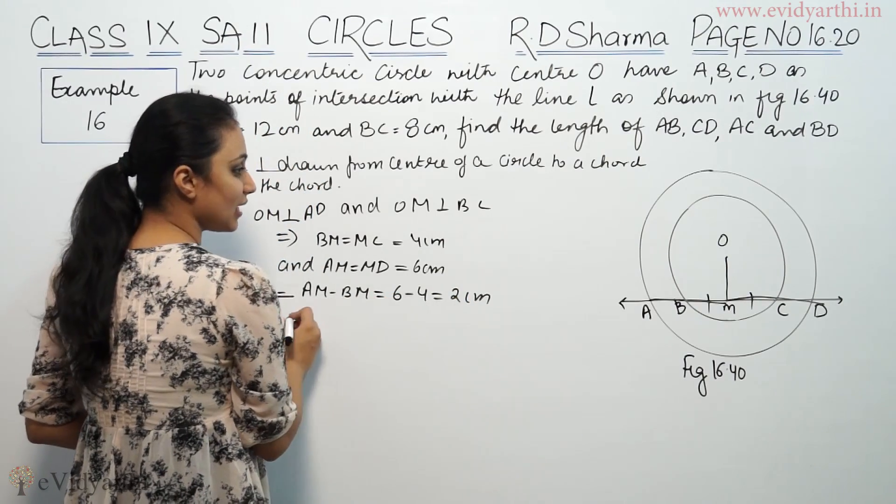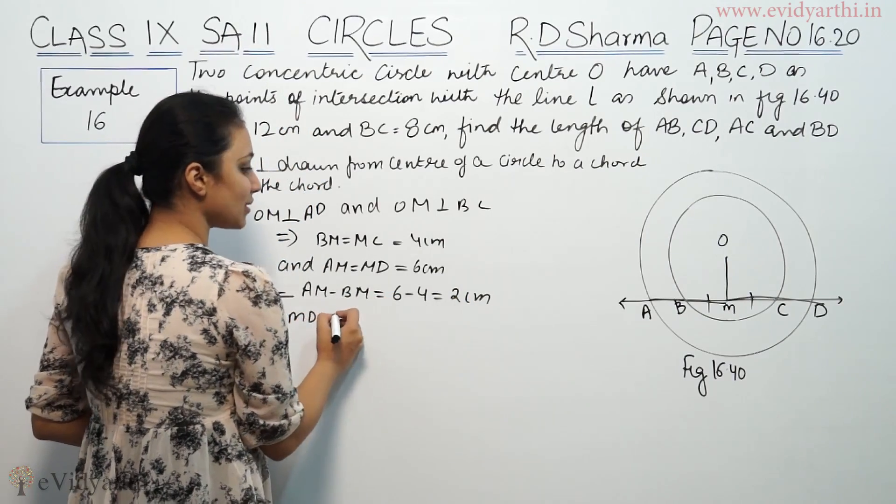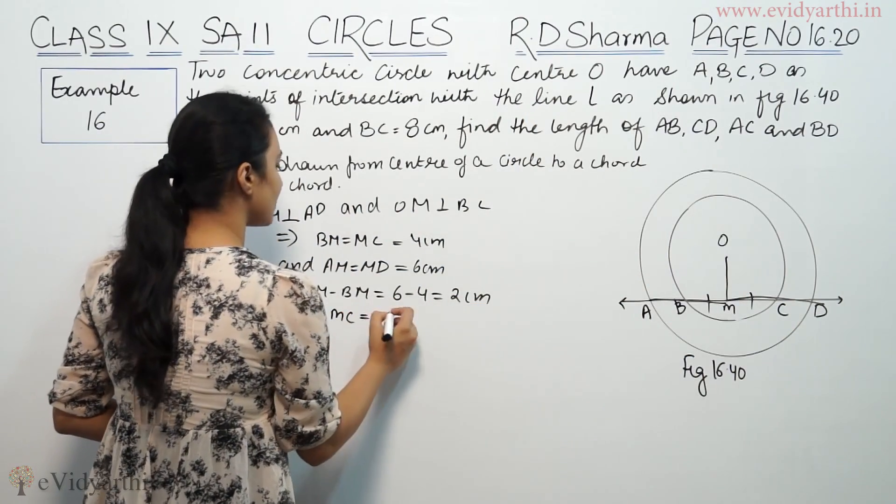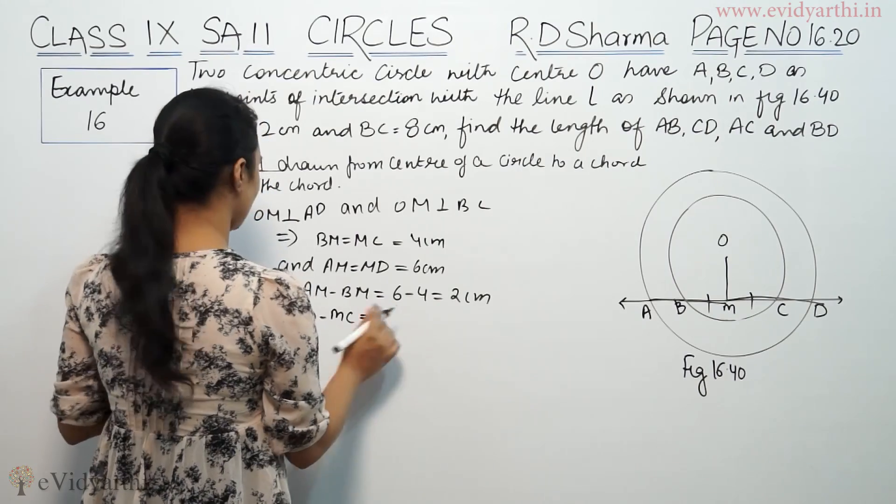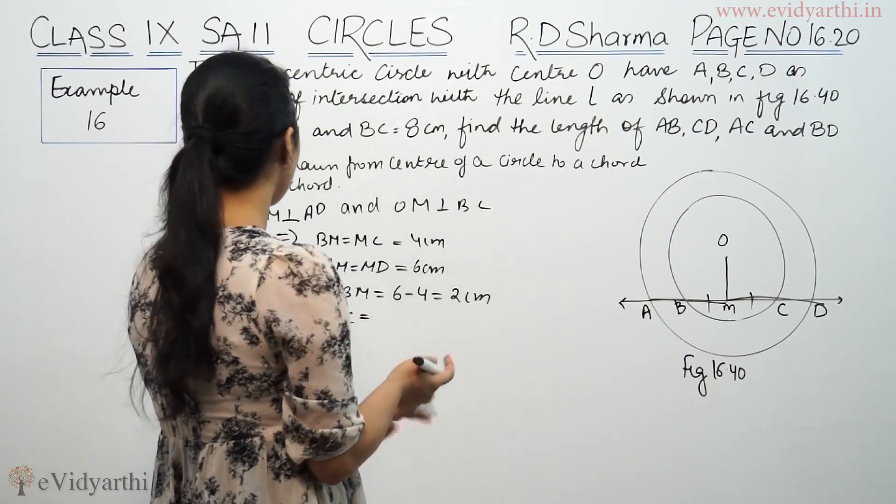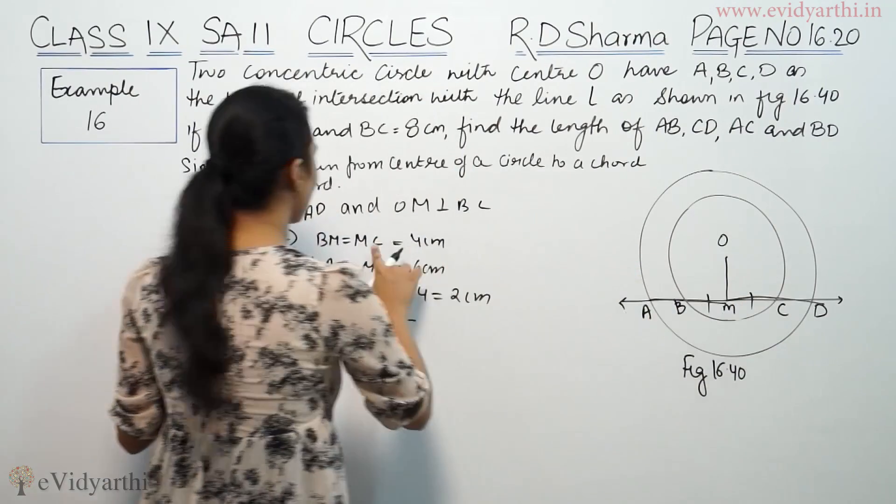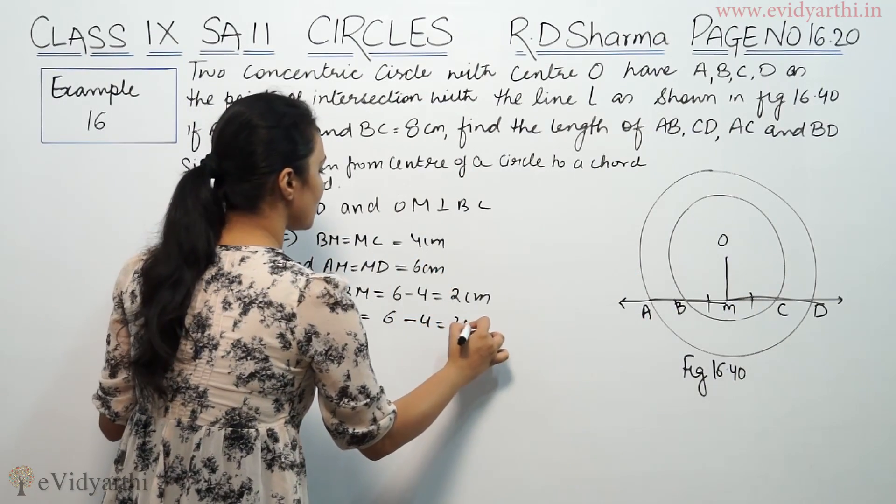Now, CD is equal to MD minus MC. MD is 6 and MC length is 4, so this is also 2 cm.